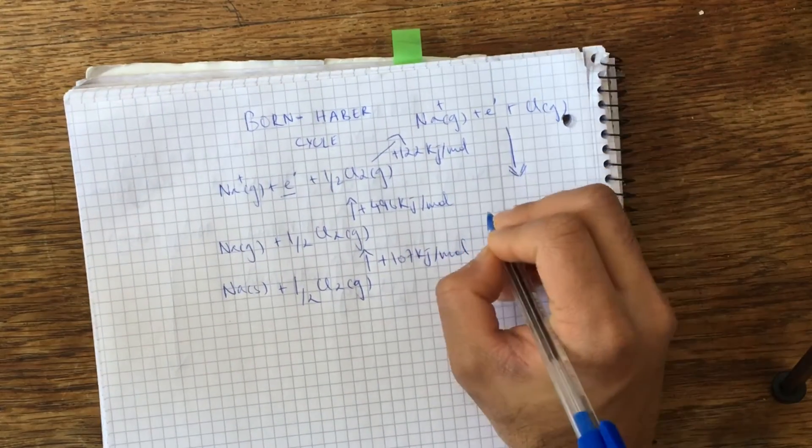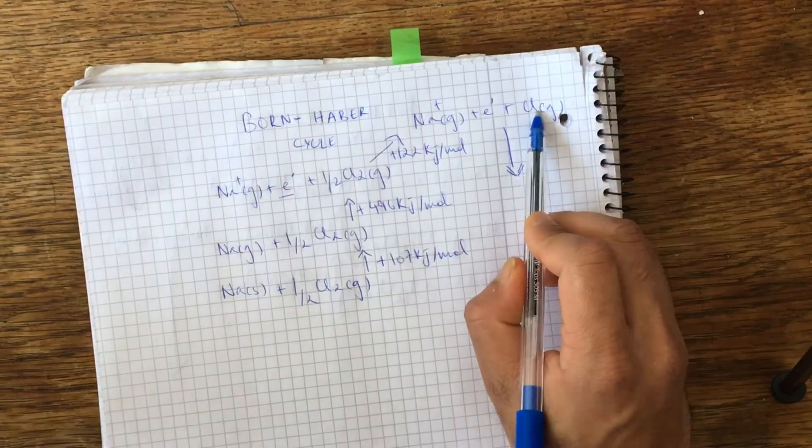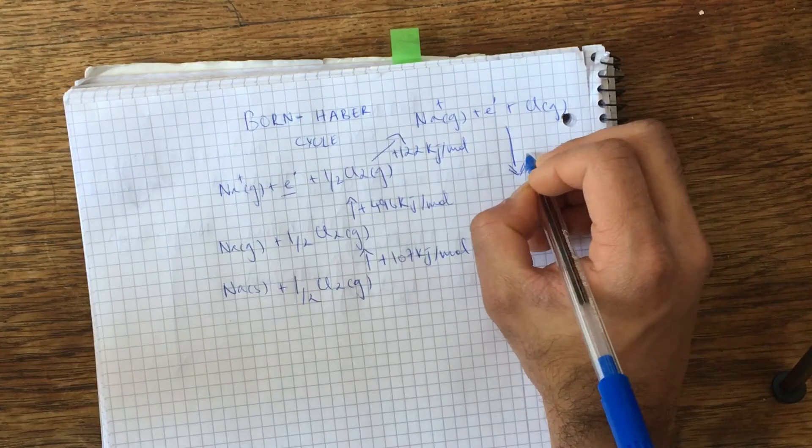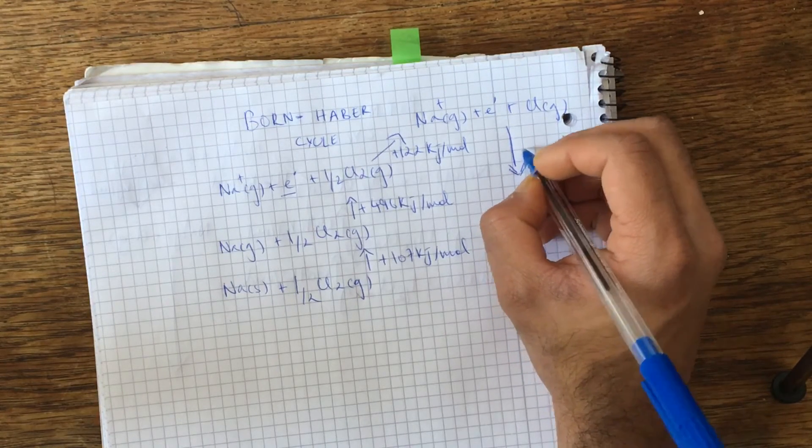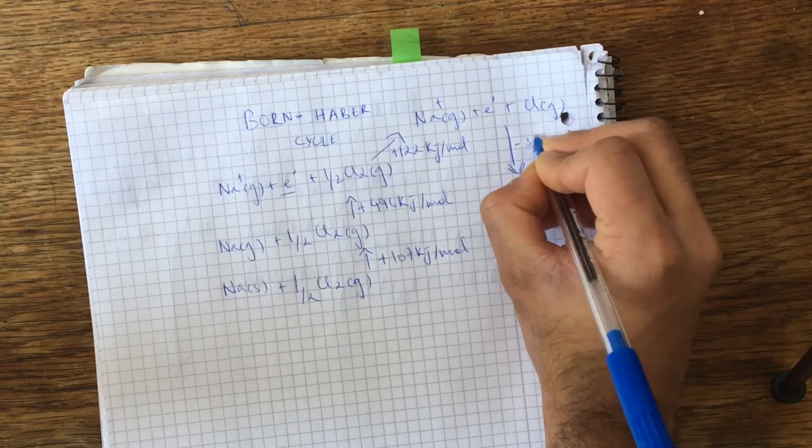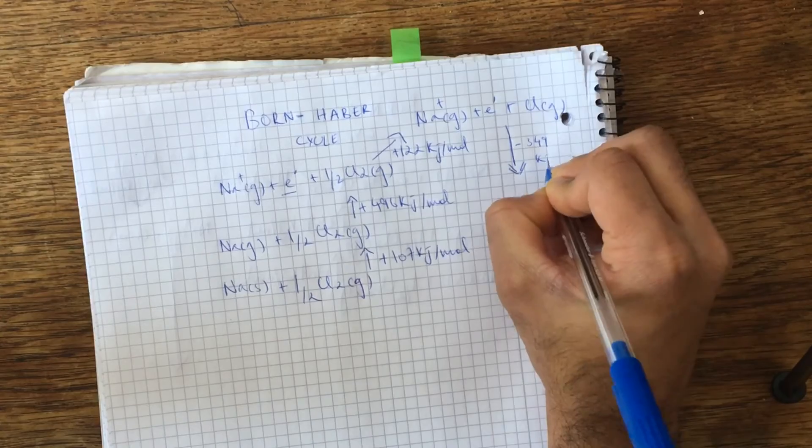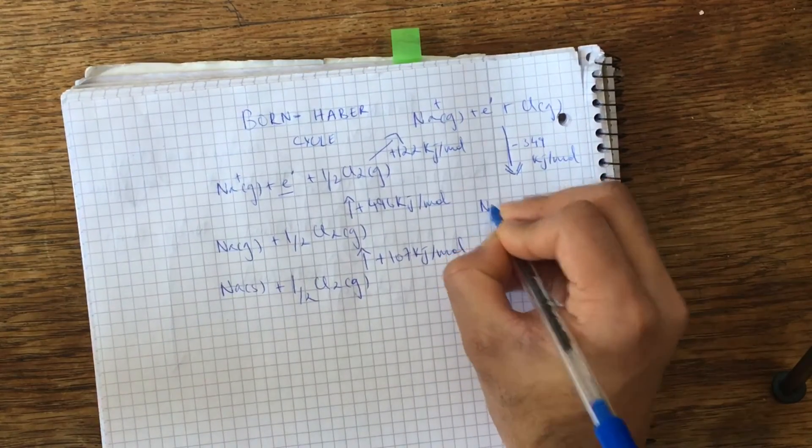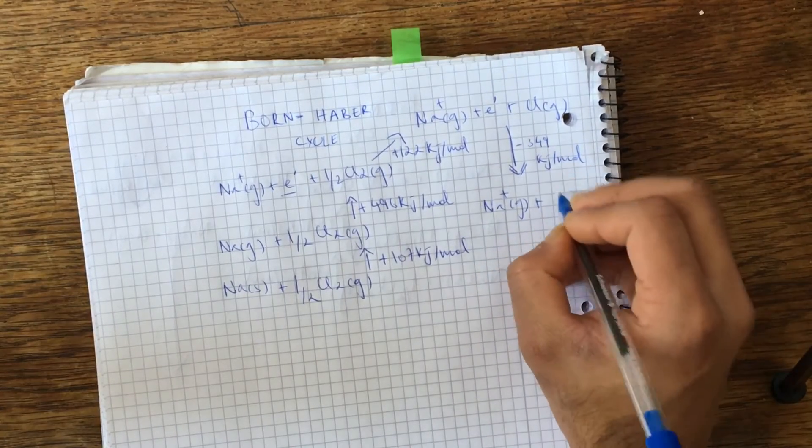And that's basically going to take in this electron, and that's where the first electron affinity of chlorine comes into play, which is 349 kilojoules per mole. And now we basically have both of them in their respective ionic states.